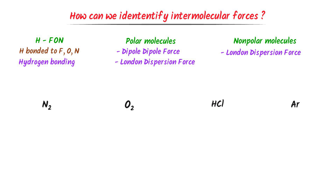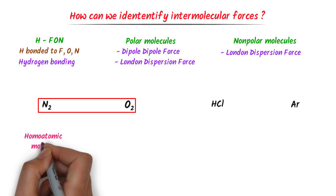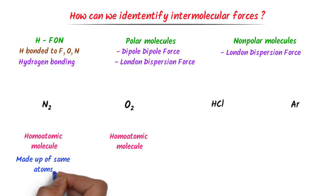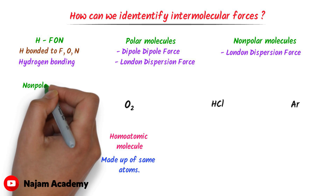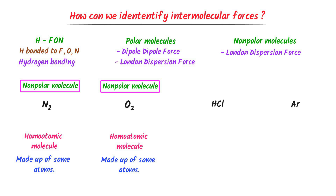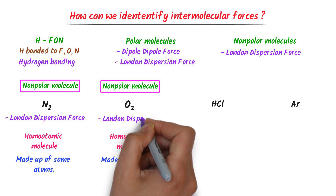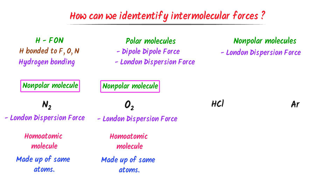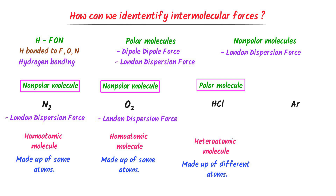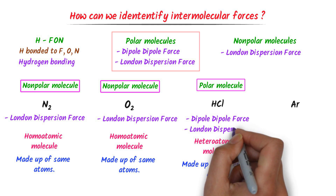Consider these molecules. Nitrogen gas and oxygen gas are homoatomic molecules, meaning they are made up of the same atoms. Remember that all homoatomic molecules are non-polar molecules because their electronegativity difference is zero. So nitrogen gas is a non-polar molecule and contains London dispersion forces. Similarly, oxygen gas is a non-polar molecule and contains London dispersion forces. In case of HCl, it is a heteroatomic molecule, meaning it is made up of different atoms. If a molecule is diatomic and heteroatomic, it is usually a polar molecule because its electronegativity difference is not zero. Thus, HCl is a polar molecule and it contains dipole-dipole forces and London dispersion forces.